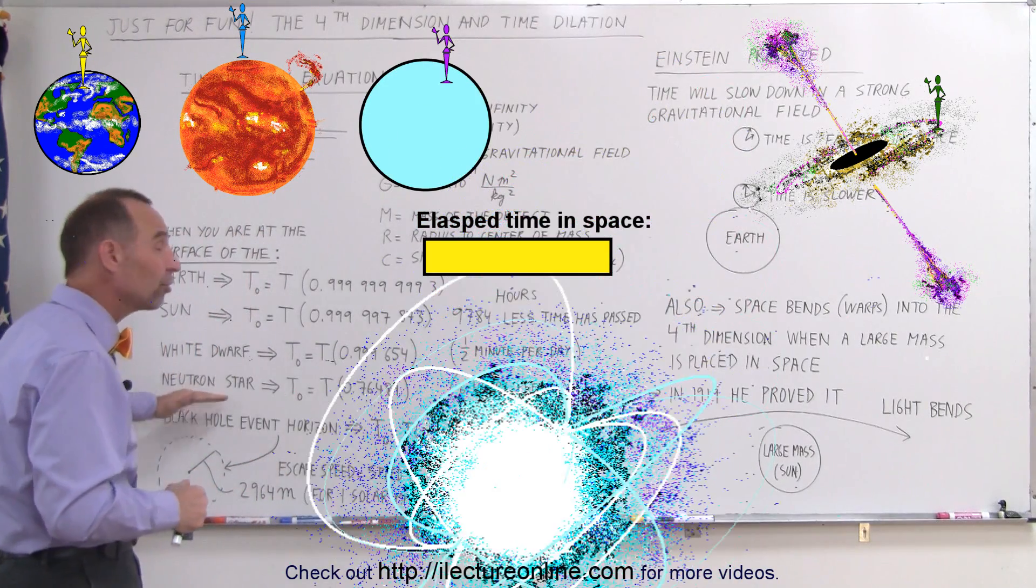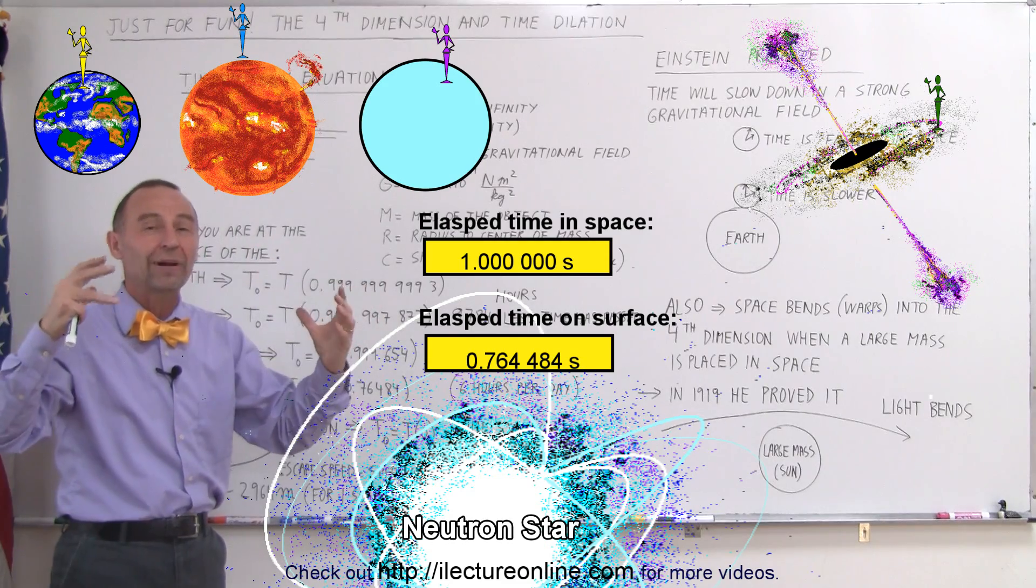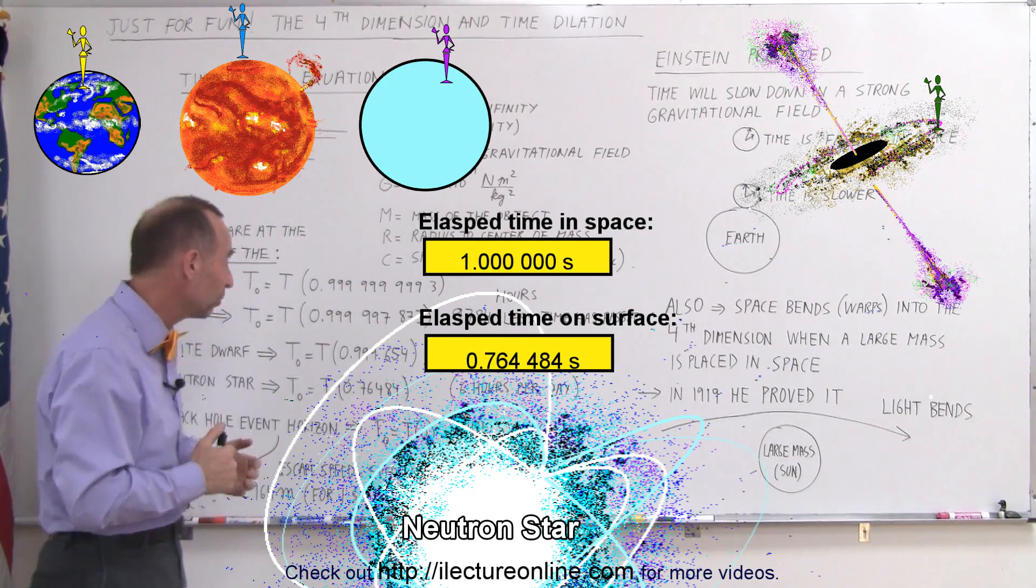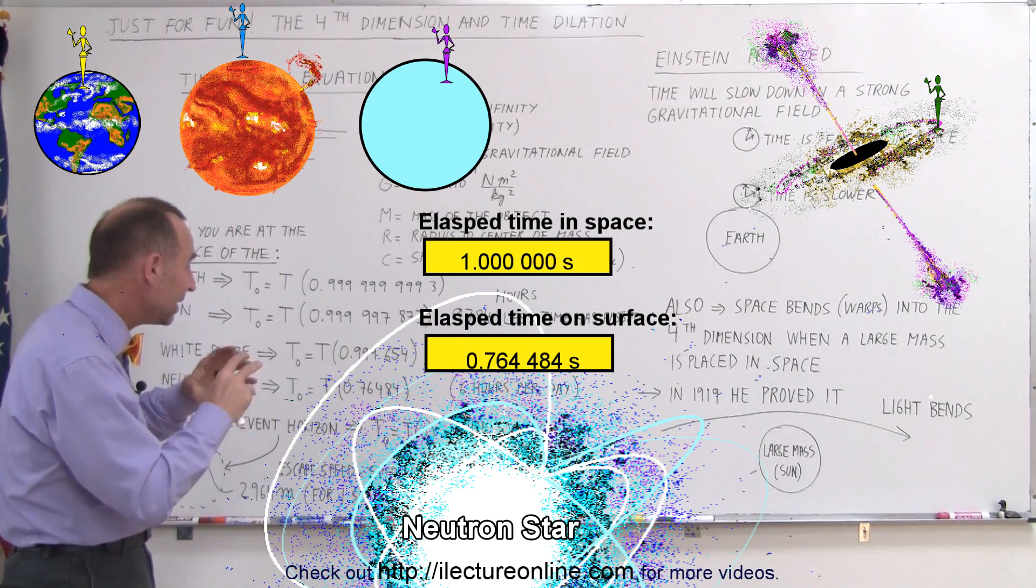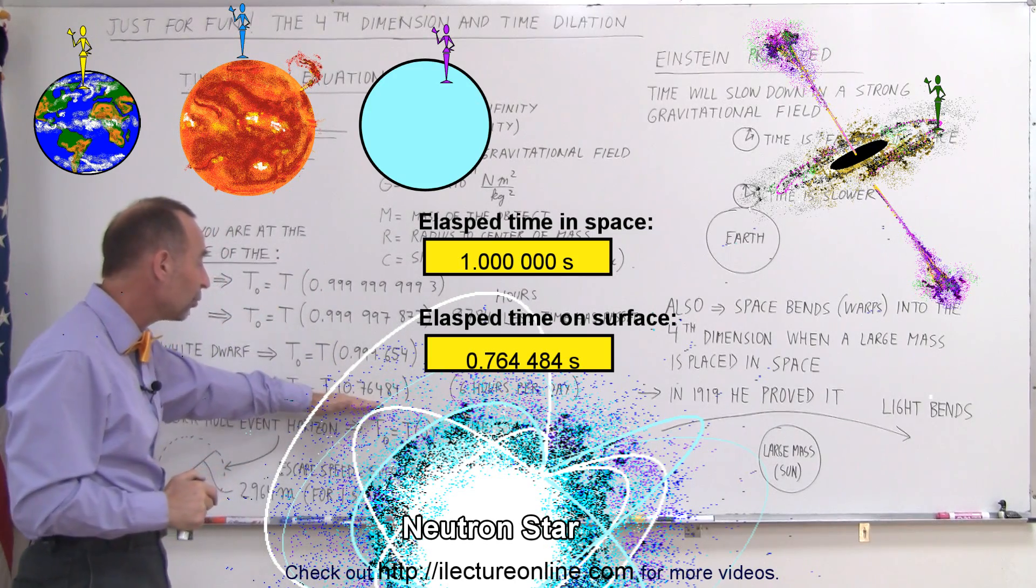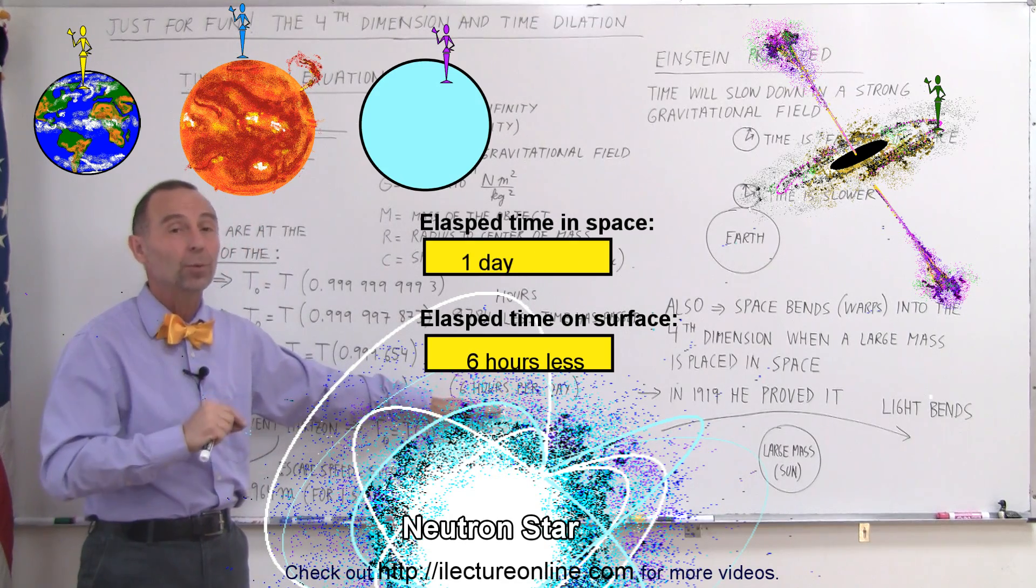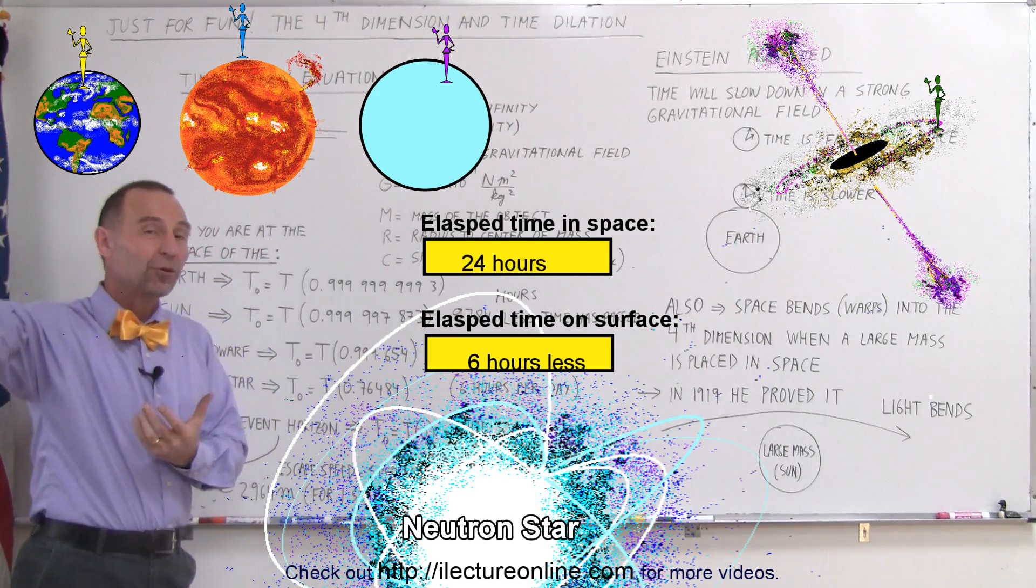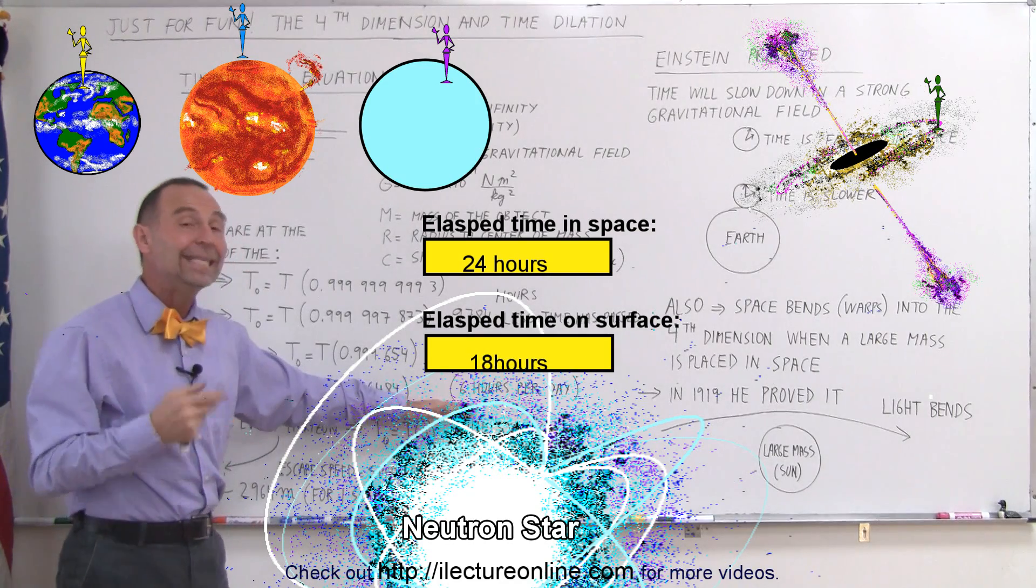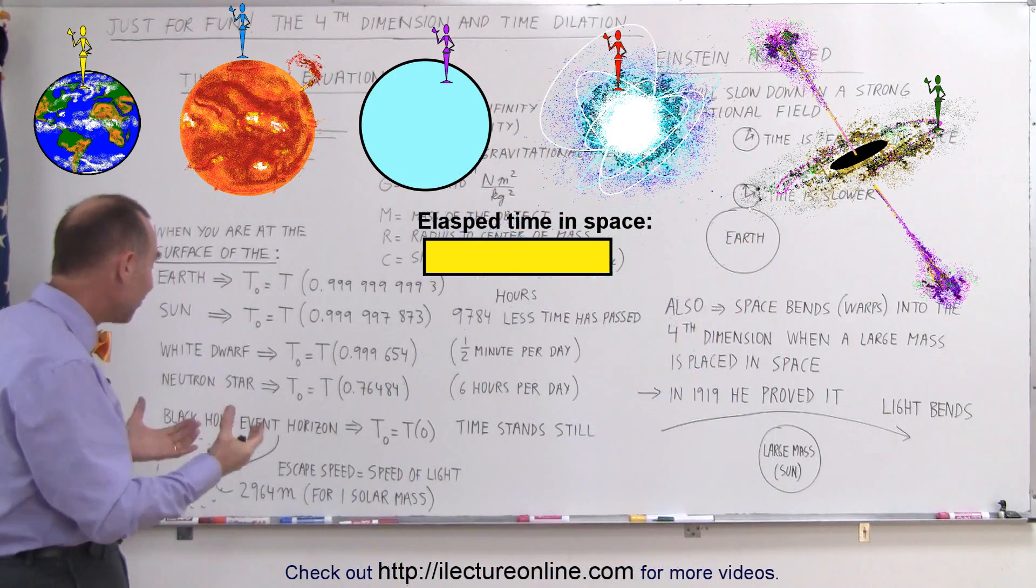When we go to a neutron star, which is even a more dense star, the remnant of a supermassive star after it explodes in a supernova explosion, the density is so high and the gravitational forces on the surface are so enormous that time has slowed down significantly, about 6 hours for every day. In other words, if 24 hours pass in space, only 18 hours will pass on the surface of a neutron star.